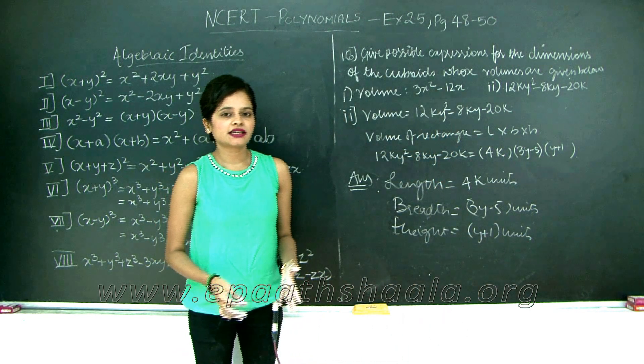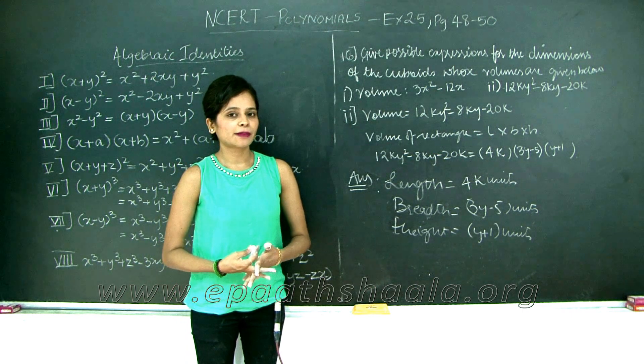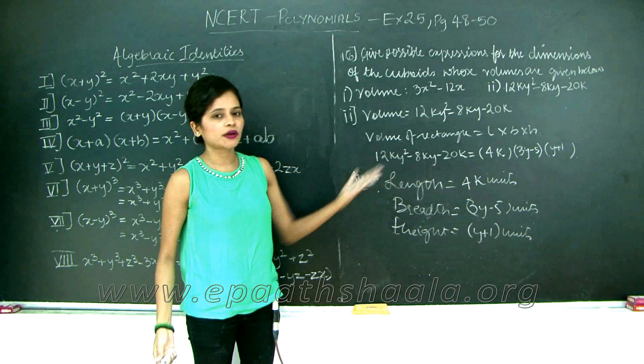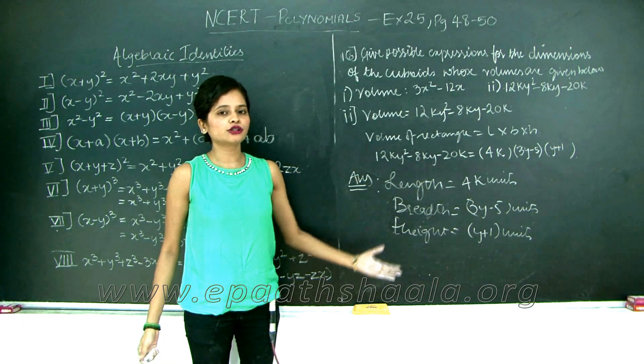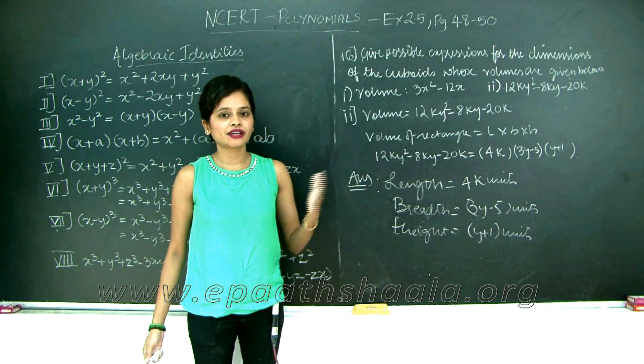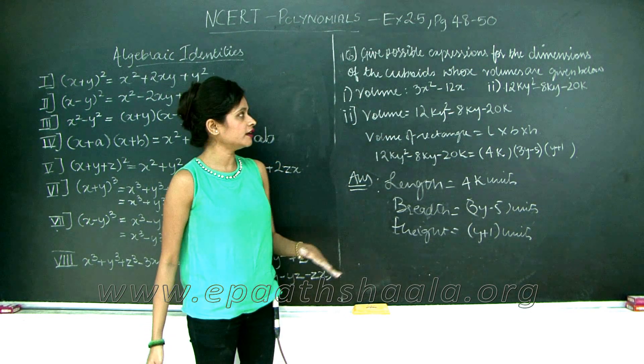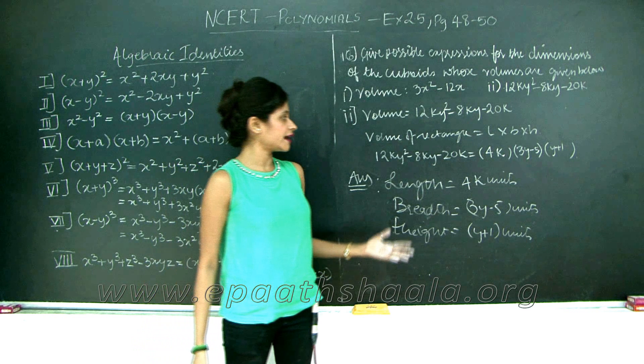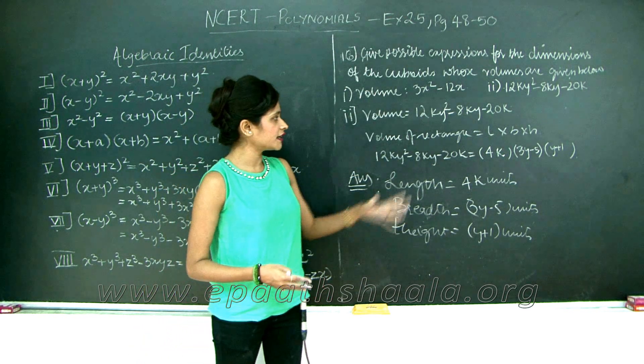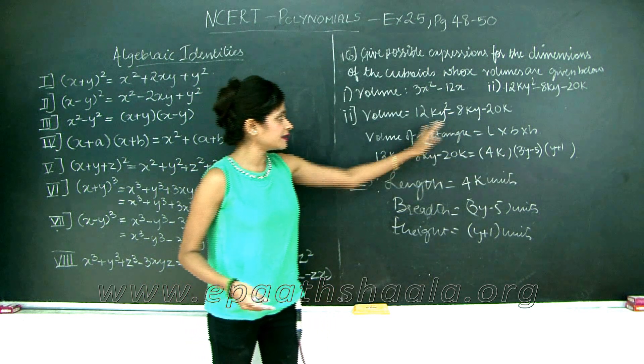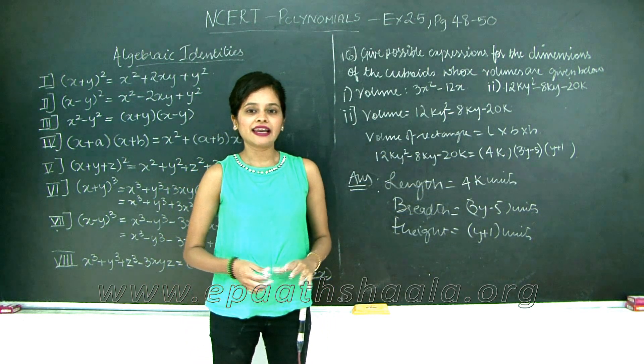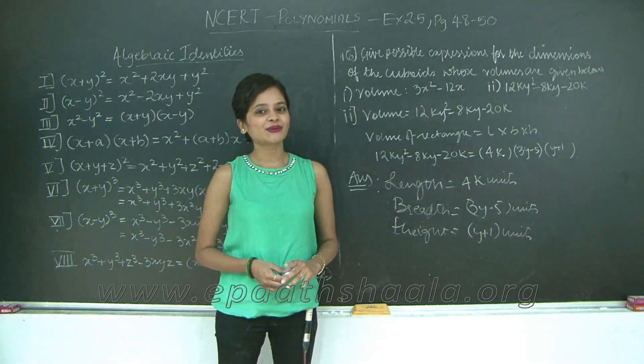With this we have completed exercise 2.5 of our chapter polynomials and you have seen in the last section how we have factorized the polynomials to find the dimensions of the areas and volumes of a cuboid or a square or a rectangle. Factorization helps in finding the dimensions provided the area is given. With this we wind up exercise 2.5. Let's continue with the summary in the next class. Thank you.